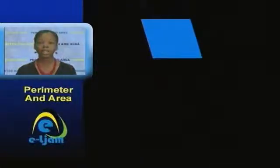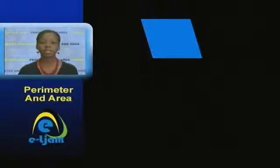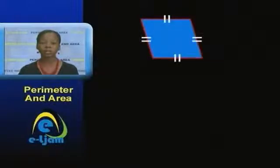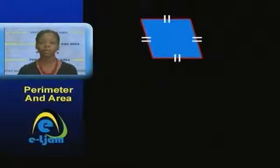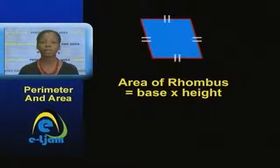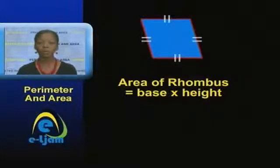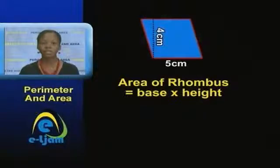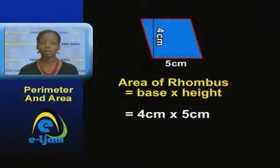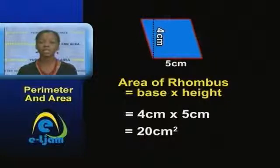A rhombus is a special kind of parallelogram. What makes it special is that though it has the properties of a parallelogram, all its sides are equal. However, it is still treated like a parallelogram. So if we want to find the area of a rhombus, we use base times height. For example, a rhombus whose sides measure 5 centimeters and height measures 4 centimeters has an area of 4 centimeters times 5 centimeters, which is 20 centimeters squared.